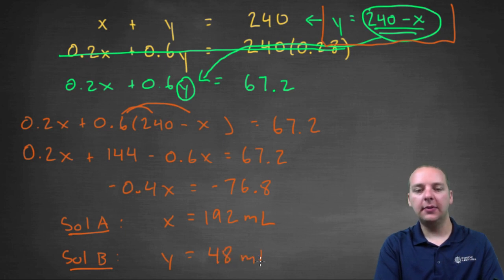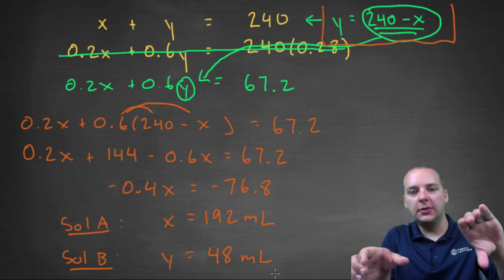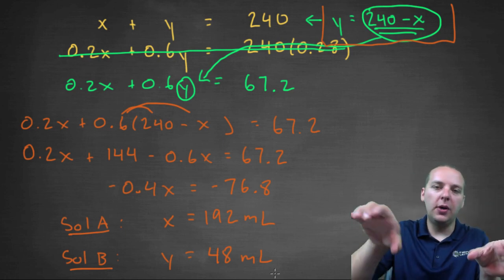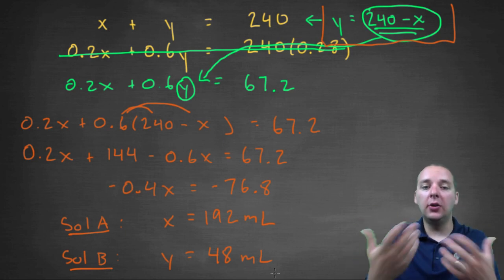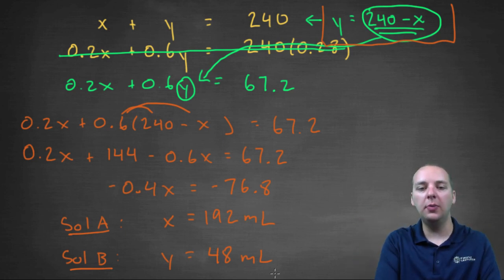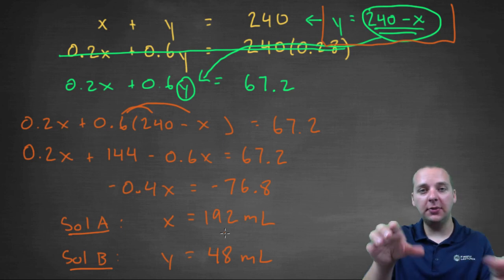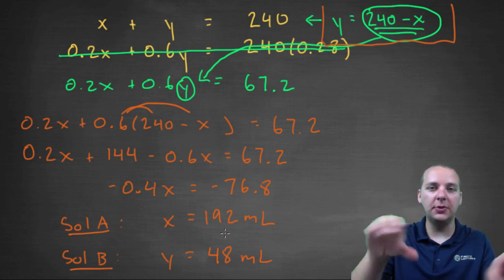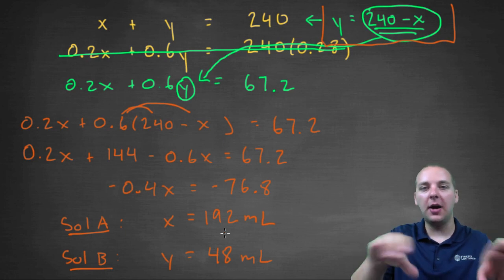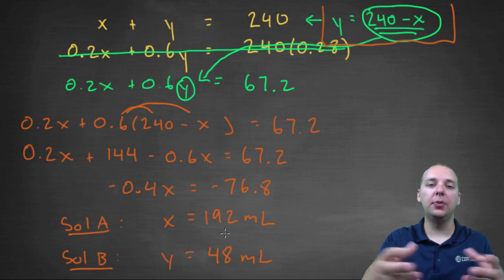So if the chemist mixes 192 milliliters of solution A and 48 milliliters of solution B, then you'll get a total of 240 milliliters. You can easily see that if you add those up. But as an added bonus, the concentration of that mixture, 20% concentration and a 60% concentration, the differing amounts of those, you would end up with a 28% mixture.